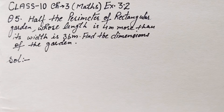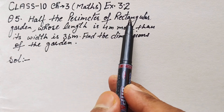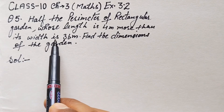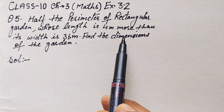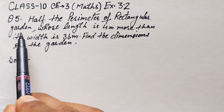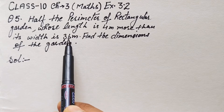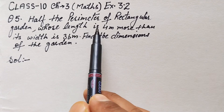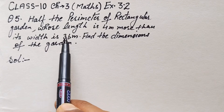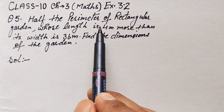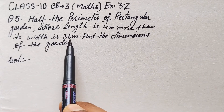Hello dear students, welcome to this math class. Let's solve this question: half the perimeter of a rectangular garden, whose length is four meters more than its breadth, is 36 meters. Find the dimensions of the garden. In the question, it is given that half of the perimeter is 36 meters, and the length is four meters more than its breadth.